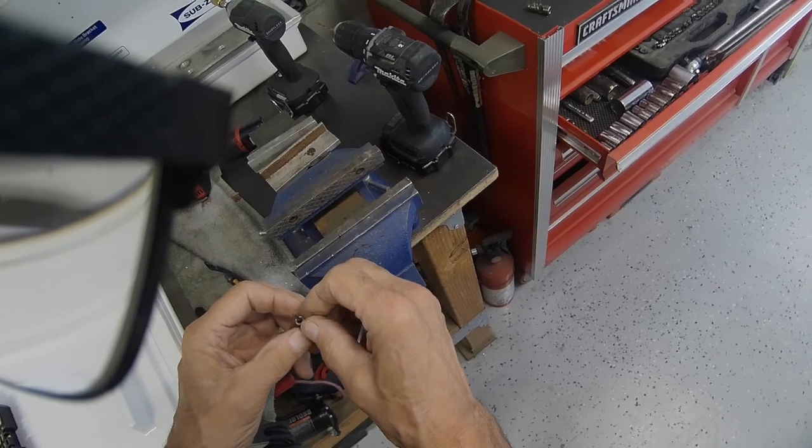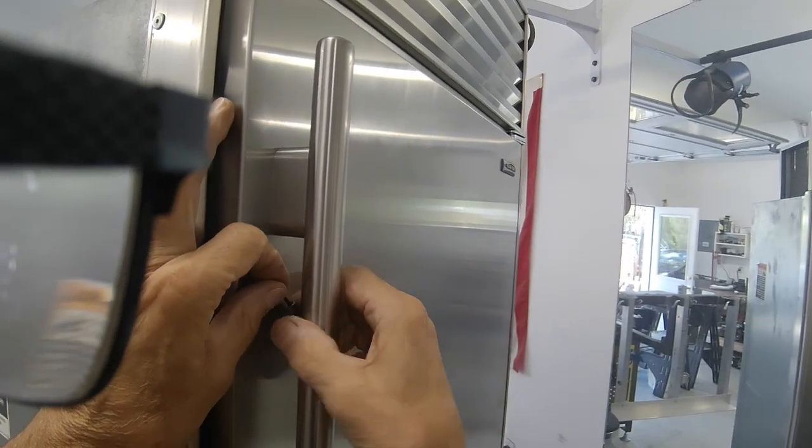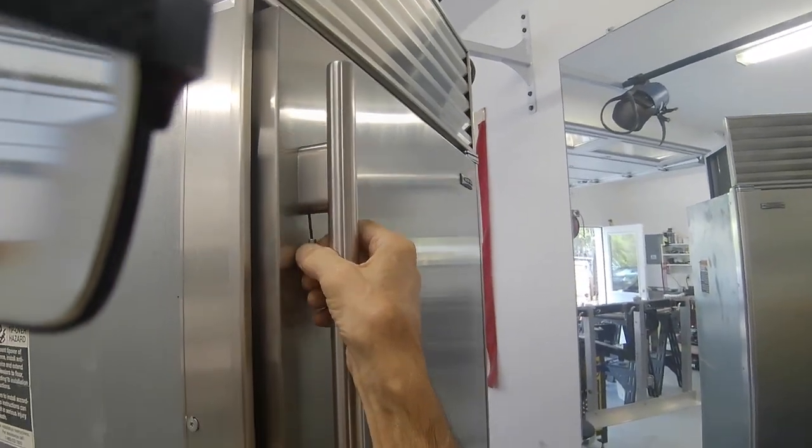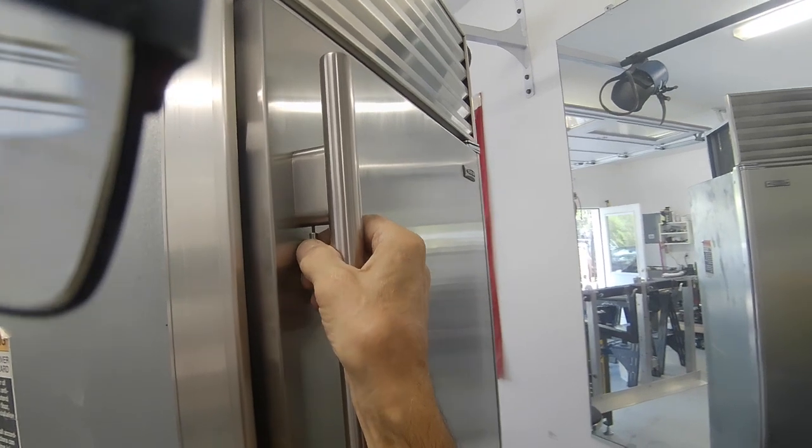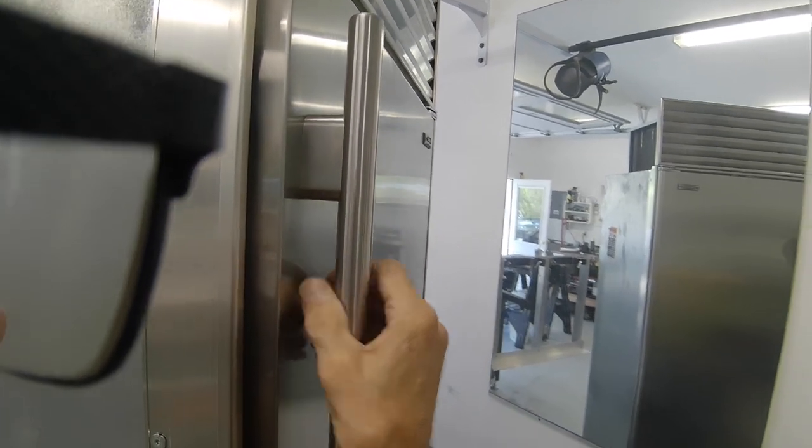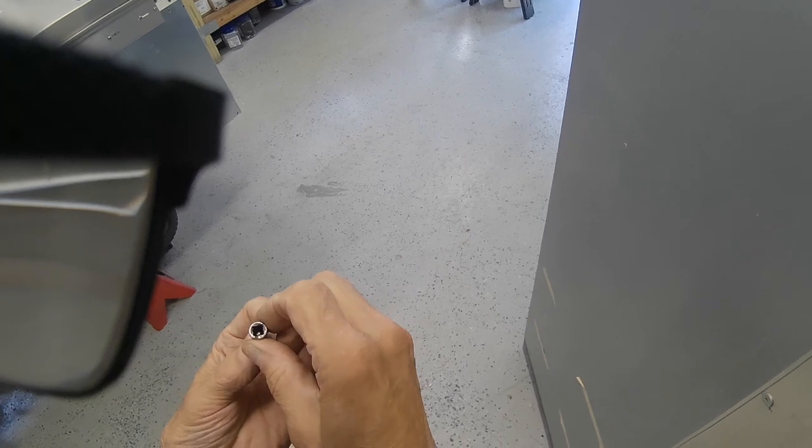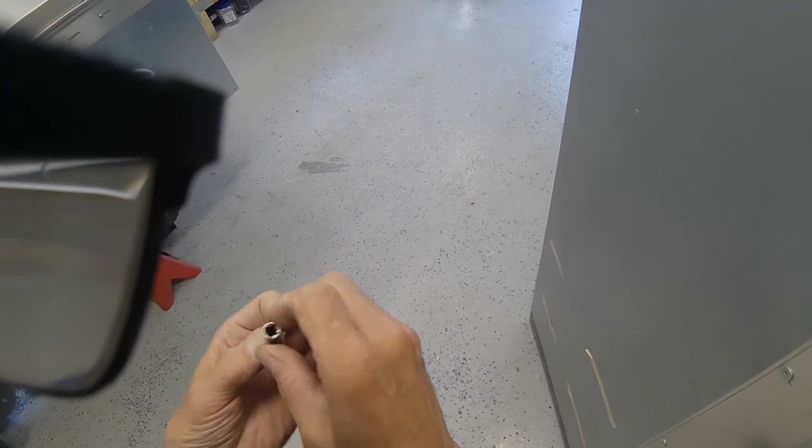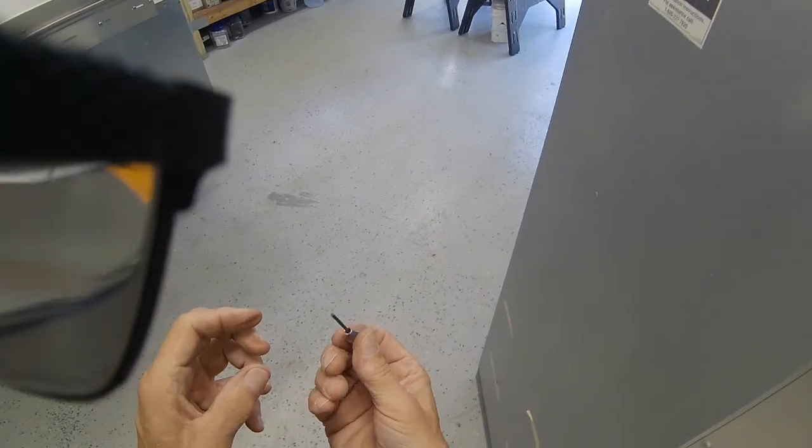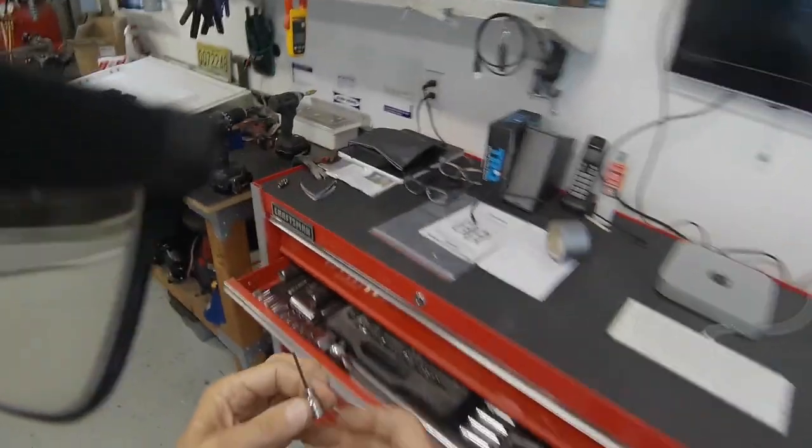Next thing to do would be to try to weld it, tack weld it. Let me just make sure it fits inside the door. Yep, there it is right there. So that's going to work. So I guess we could probably glue this but I don't think that's going to stick. What I need to do is weld it. So we'll tack weld that and I'll get back to you.